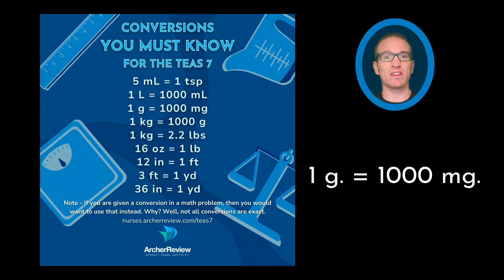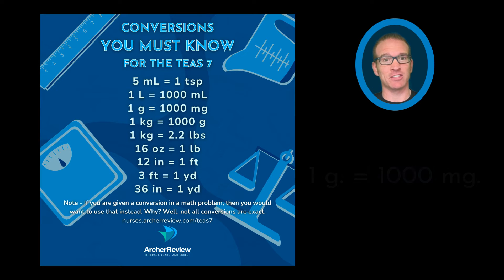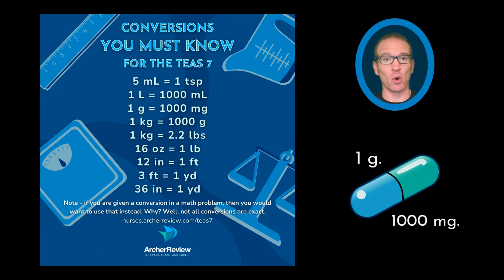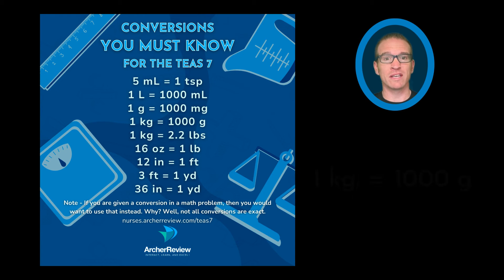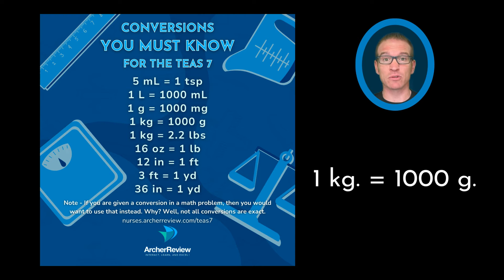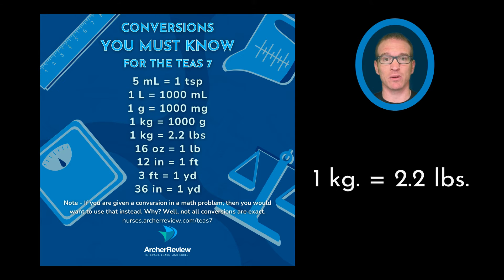One gram is one thousand milligrams — this is what I would call a horse pill. That is a very large pill: one thousand milligrams. One kilogram equals one thousand grams, and one kilogram is also approximately 2.2 pounds.